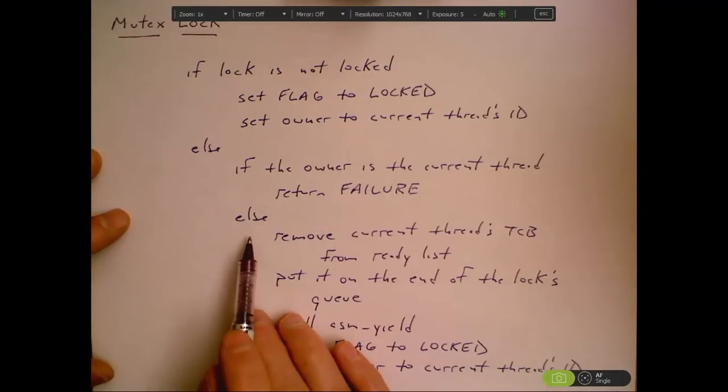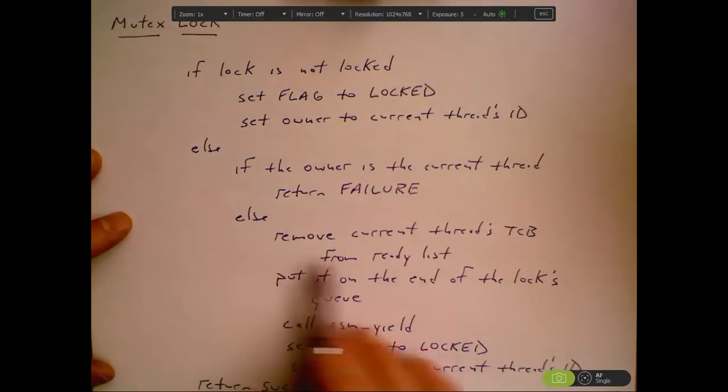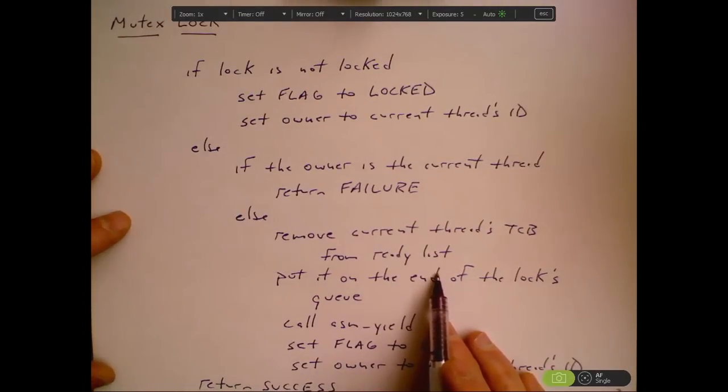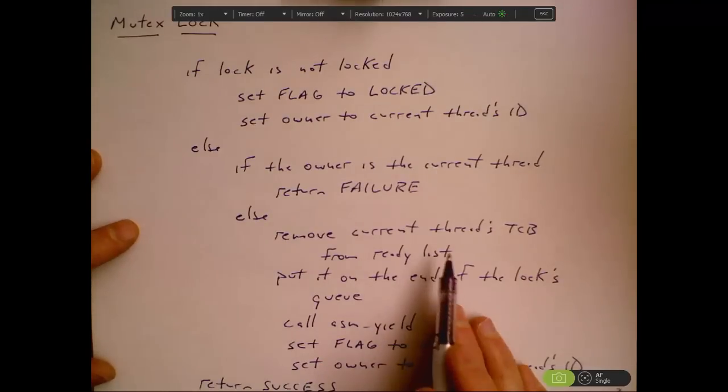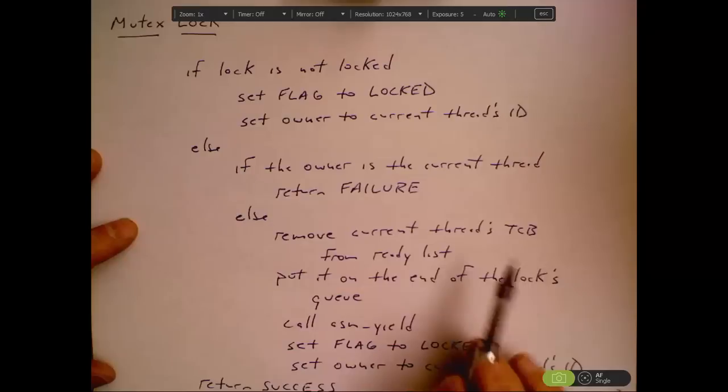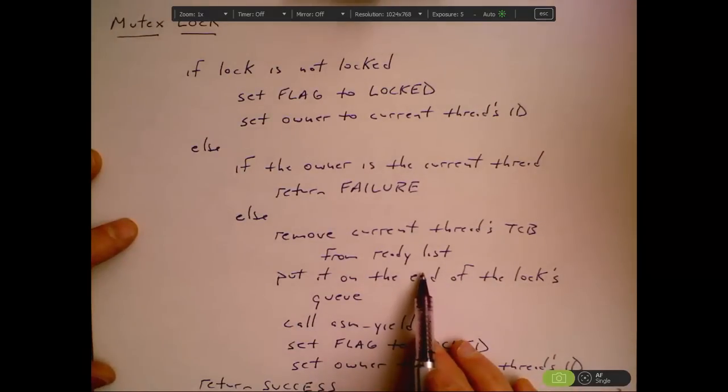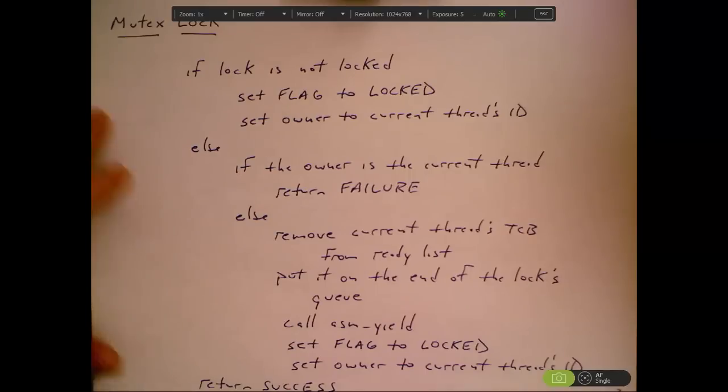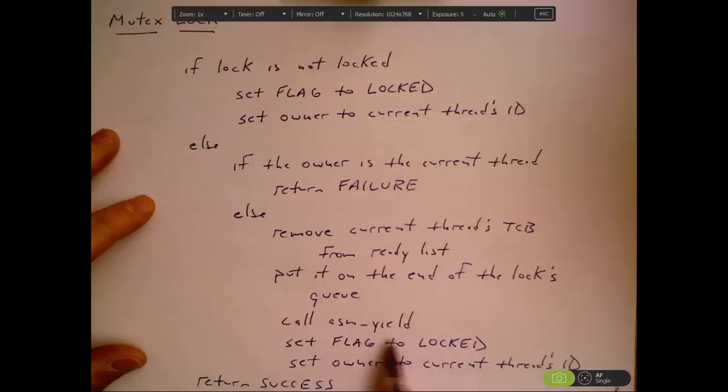Otherwise we need to wait for this lock. So we remove the current thread's TCB from the ready list. We're no longer ready to run. We're going to block the thread and that's what it means to block the thread - remove it from the ready list. So we take the TCB off the ready list and we put it on to the end of this lock's queue. At that point then we call our ASM yield. We can no longer run so we need to yield the processor to somebody else.